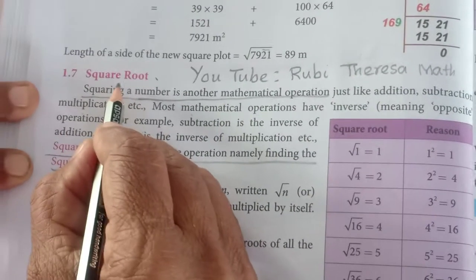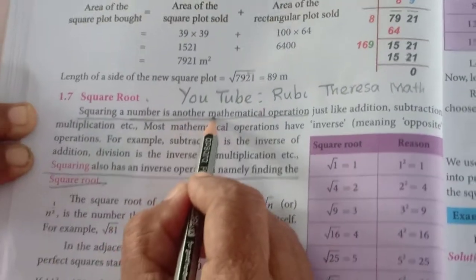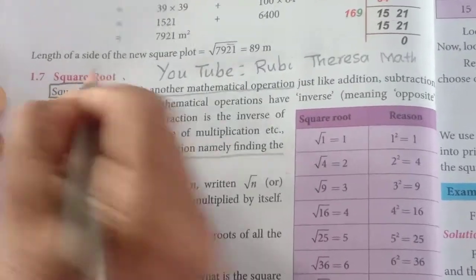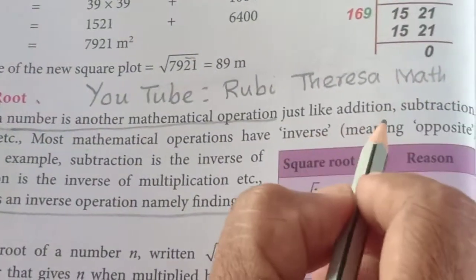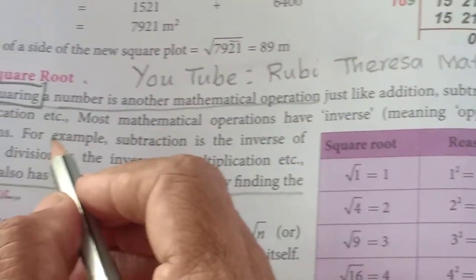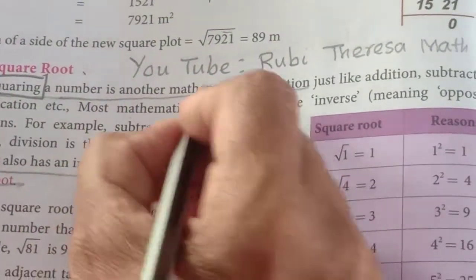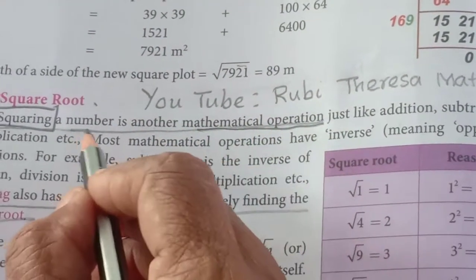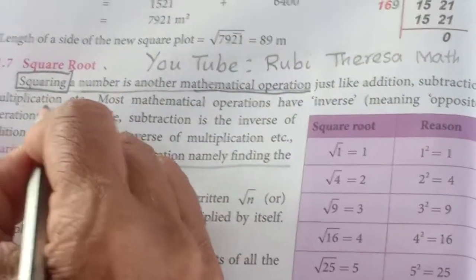Square root — squaring a number is another mathematical operation. What are the fundamental four operations? Addition, subtraction, multiplication, division. Just like that, squaring a number is another mathematical operation. When they are asking in one mark, you should know it is a mathematical operation, just like addition, subtraction, multiplication, etc.